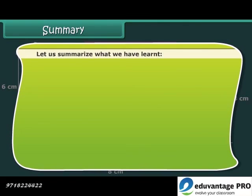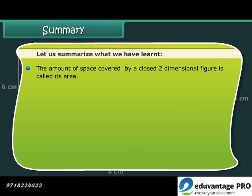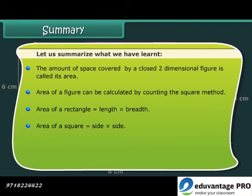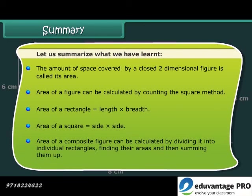Let us summarize what we have learned. The amount of space covered by a closed two-dimensional figure is called its area. Area of a figure can be calculated by the counting the squares method. Area of a rectangle is equal to length multiplied by breadth. Area of a square is equal to side multiplied by side. Area of a composite figure can be calculated by dividing it into individual rectangles, finding their areas, and then summing them up.